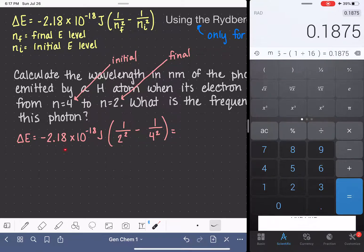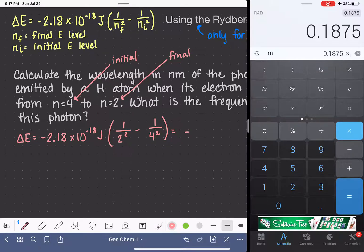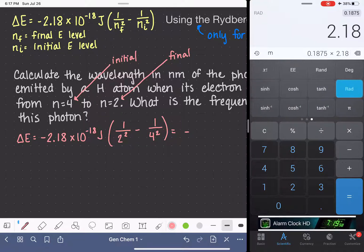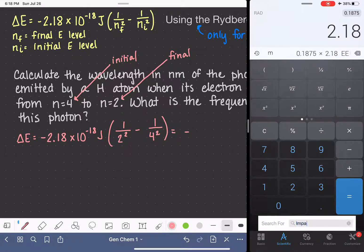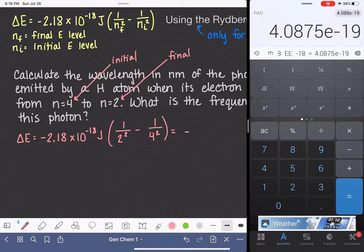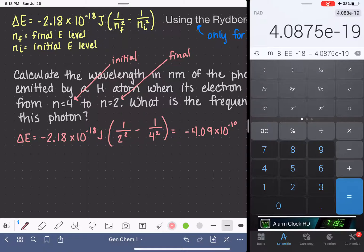And then I'm going to take that, and I'm going to multiply it by this number. And I'm not going to put the negative sign in the calculator, I'm just going to remember that it's there. 2.18 times 10 to the minus 18. So my change in energy is negative 4.09 times 10 to the minus 19 joules.